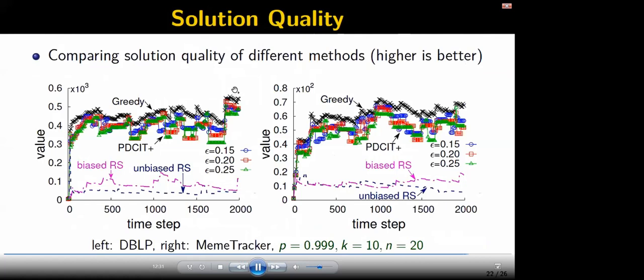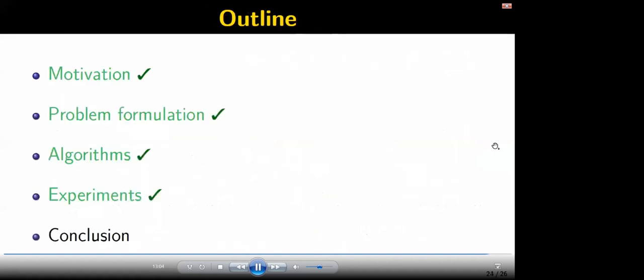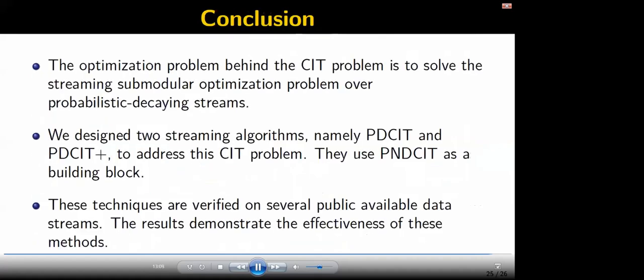We show the solution quality compared with different methods. PD-CIT+ finds solutions with quality close to greedy and is much better than sampling methods. Finally, for scalability, the required oracle calls of greedy increase very fast, but PD-CIT increases relatively slowly, so PD-CIT+ is very efficient. In conclusion, the optimization problem behind CIT is to solve the streaming submodular optimization problem over a PDS. We designed two streaming algorithms to solve the CIT problem and conducted experiments to verify the effectiveness of the proposed methods.